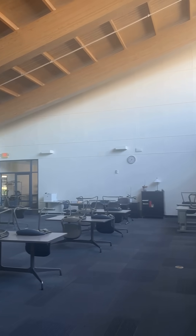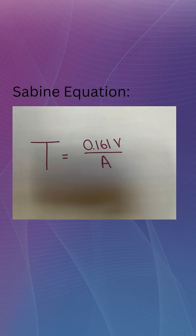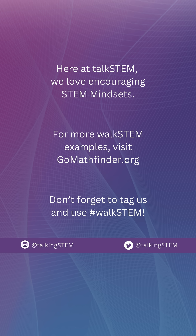There's even a formula called the Sabine equation that engineers use to calculate the exact reverberation time of a room. It's really cool to think about how designers and engineers consider things like sound when choosing materials for a building. Here's that equation. The letters you see here are called variables — they help us understand different things about a space. For example, the letter V tells us how big the room is, and A tells us how much sound the room can soak up. Together, these two variables give us the reverberation time of a room.